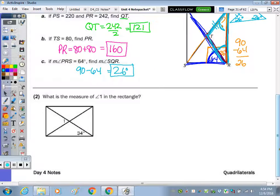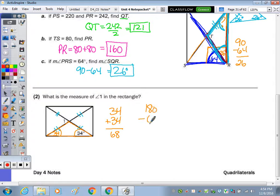Number 2 asks: what is the measure of angle 1 in the rectangle? As we mentioned, all parts of the diagonals are the same, which creates an isosceles triangle. So this is 34 degrees and this is 34 degrees. 34 plus 34 is 68. The interior angle sum for a triangle is 180, so subtract 68 and we get 112 degrees. We know that a straight line forms a linear pair, which together equals 180 degrees. So 180 minus 112 is 68. The measure of angle 1 is 68 degrees.